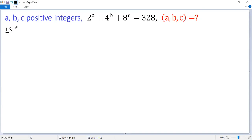The left side can be written as 2 to the power of a, plus 4 is 2 squared, so 2 squared to the power of b, plus 8 is 2 cubed, so 2 cubed to the power of c. So we can write this as 2 to the power of a plus 2 to the power of 2b plus 2 to the power of 3c.